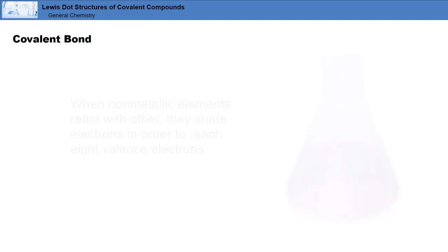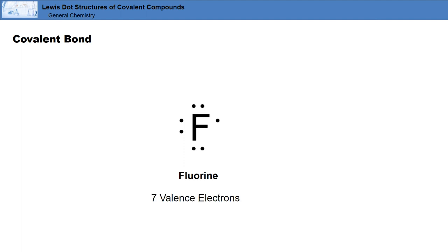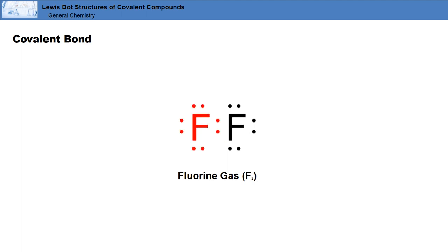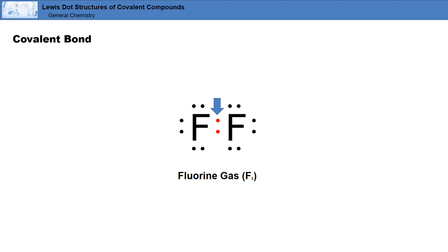One fluorine atom has seven valence electrons, so it requires one more to satisfy the octet rule. Fluorine gas, or F2, shares electrons between two fluorine atoms. The left fluorine atom now has a total of eight electrons around it, as does the right fluorine atom. The shared electrons form a covalent bond. Any unshared electrons are called lone pairs. The two electrons that form the covalent bond are often represented by a single line. We can represent the fluorine gas molecule by using a line and dots to show the bonding pair and the six lone pairs, respectively. This is called a Lewis dot structure.